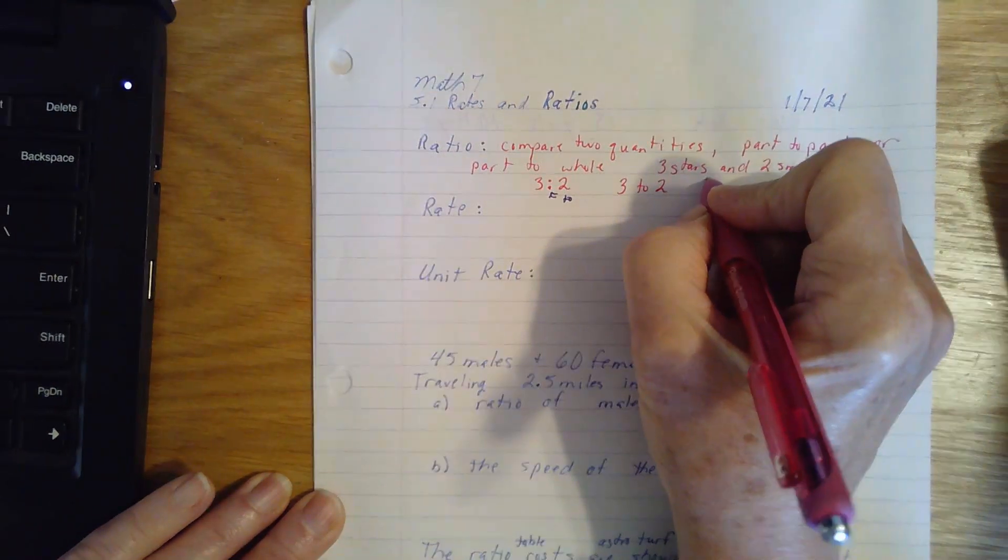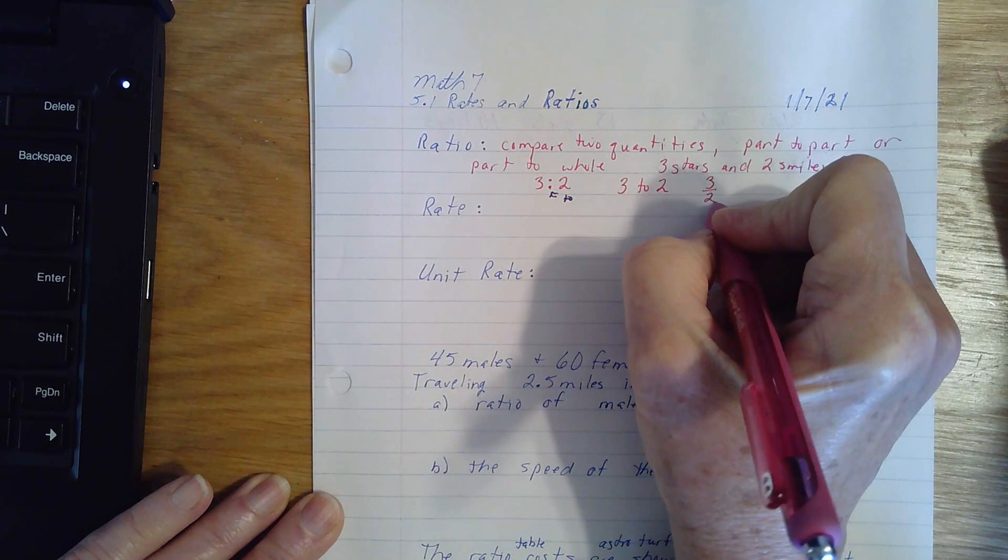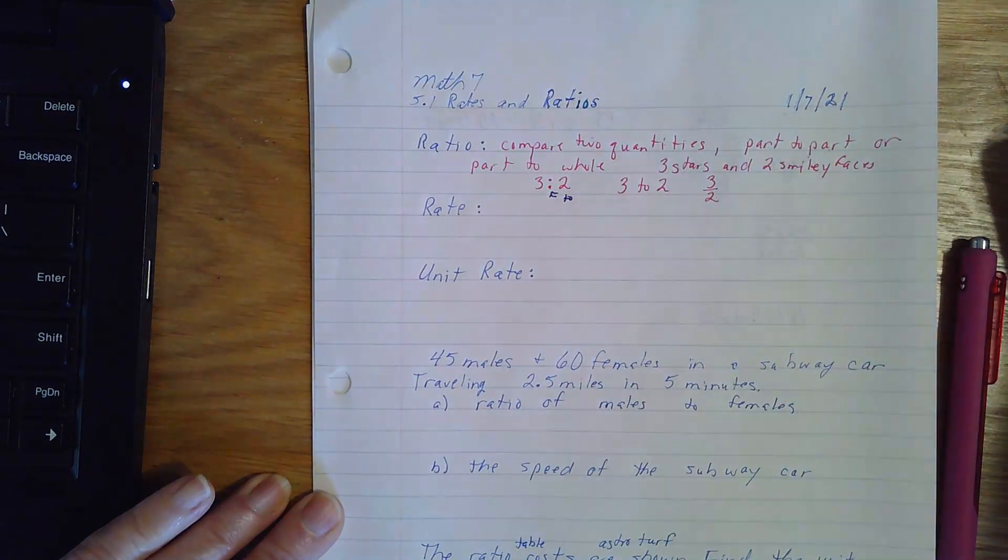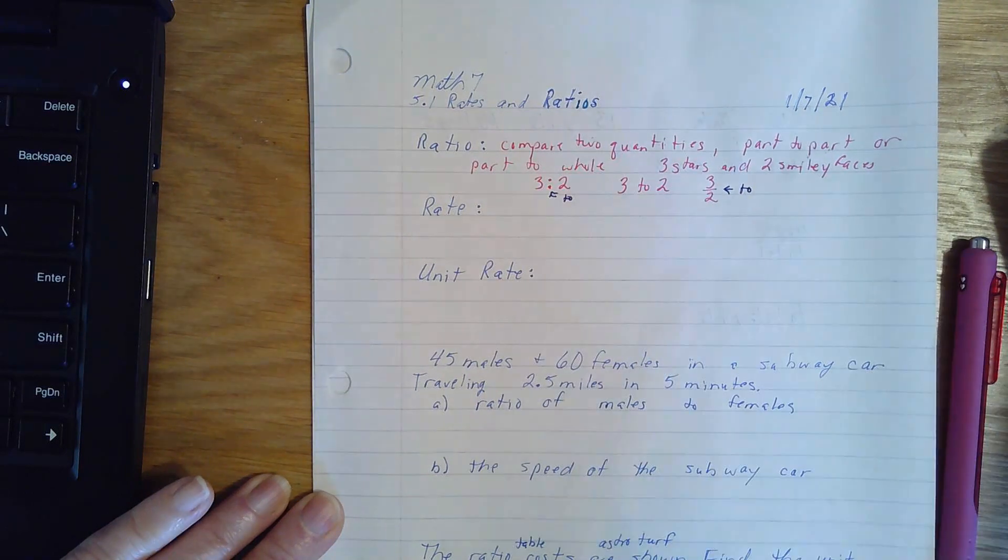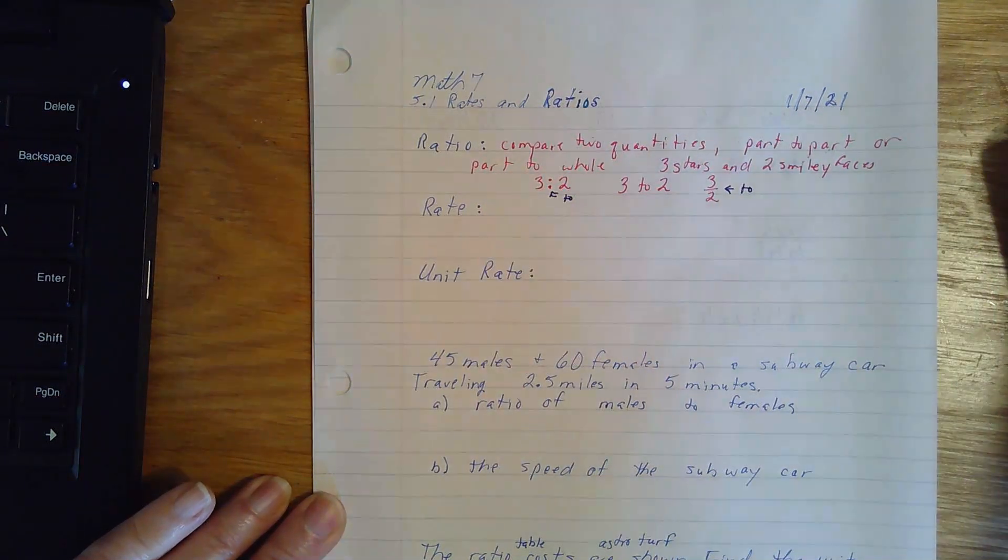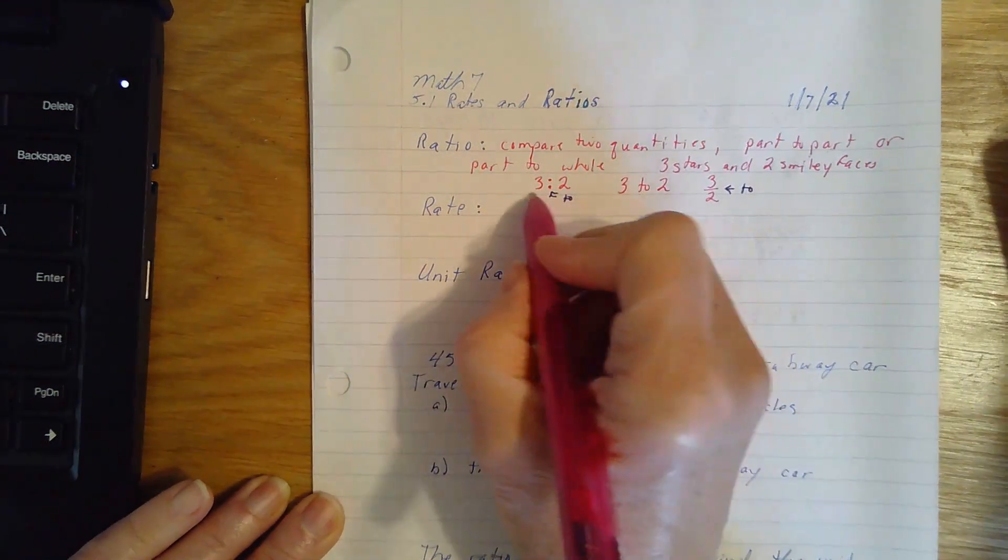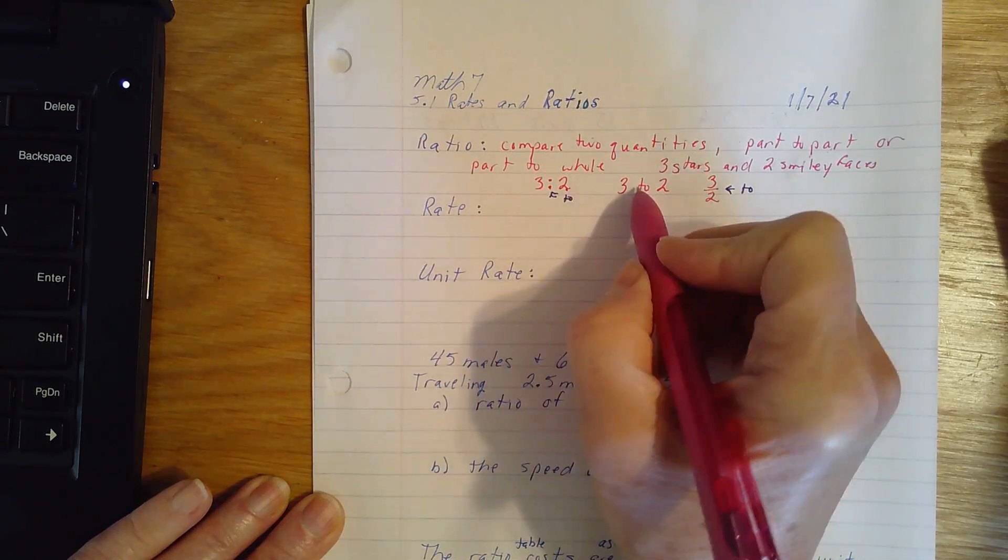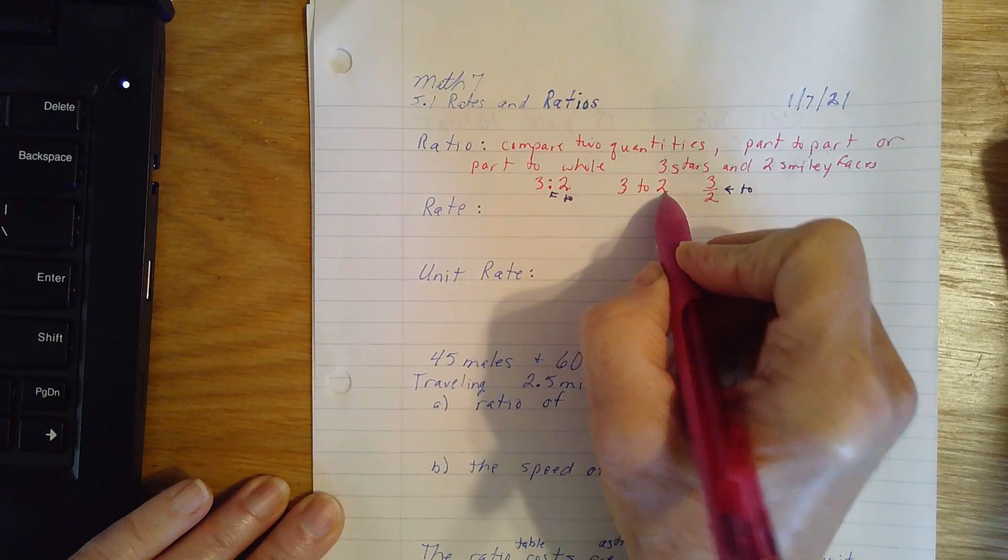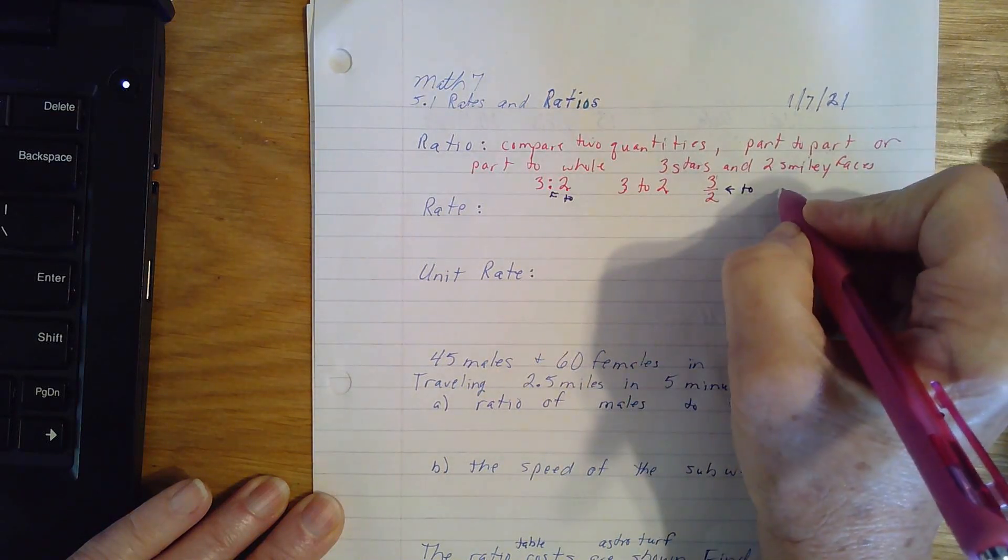And it could be written as 3 to 2. It looks like a fraction, but again you would say this 'to'. It's the word to. So it's a 3 to 2 comparison. Three stars to two smiley faces.